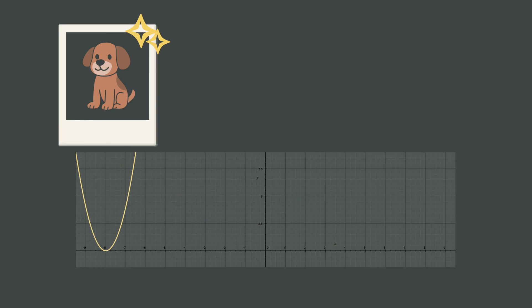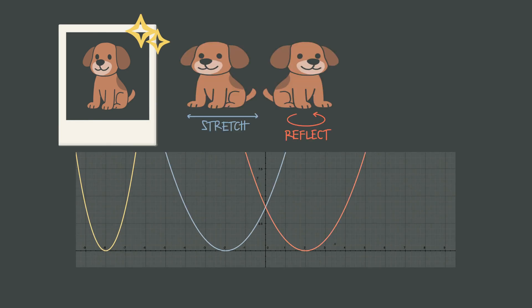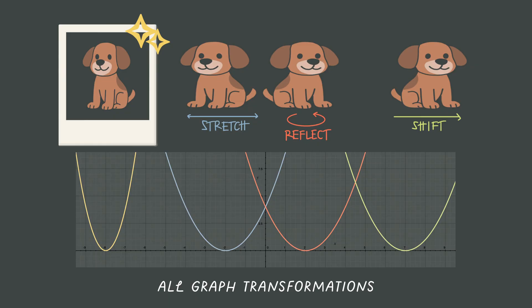Imagine you're snapping a picture of your dog. You can stretch it wide, flip it sideways, even slide it over, and those are all graph transformations. But the one thing no one explains? The mindset shift that makes all those moves crystal clear.